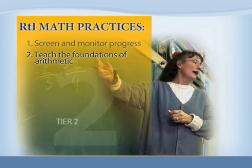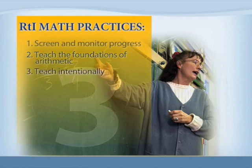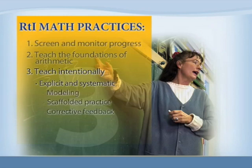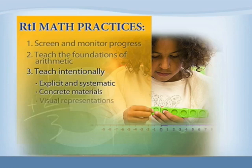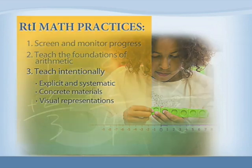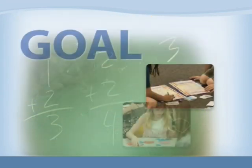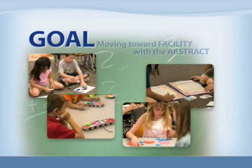Instruction during Tier 2 and Tier 3 interventions is intentional. In RTI, teachers use explicit systematic instruction that includes modeling, scaffolded practice, corrective feedback, and cumulative review. Students need opportunities to work with concrete materials and visual representations of mathematical ideas, such as number lines, arrays, and strip diagrams. Teachers use concrete manipulatives first, followed by representations, with the goal of moving toward facility with the abstract.